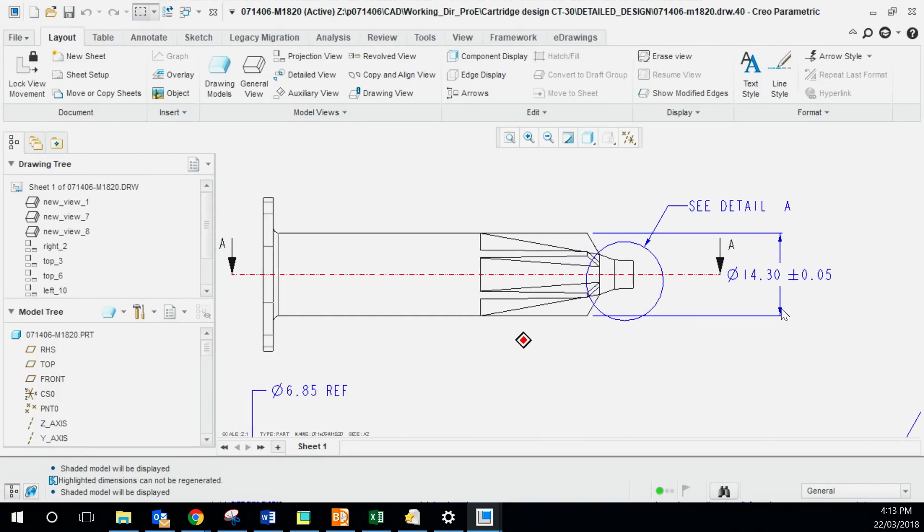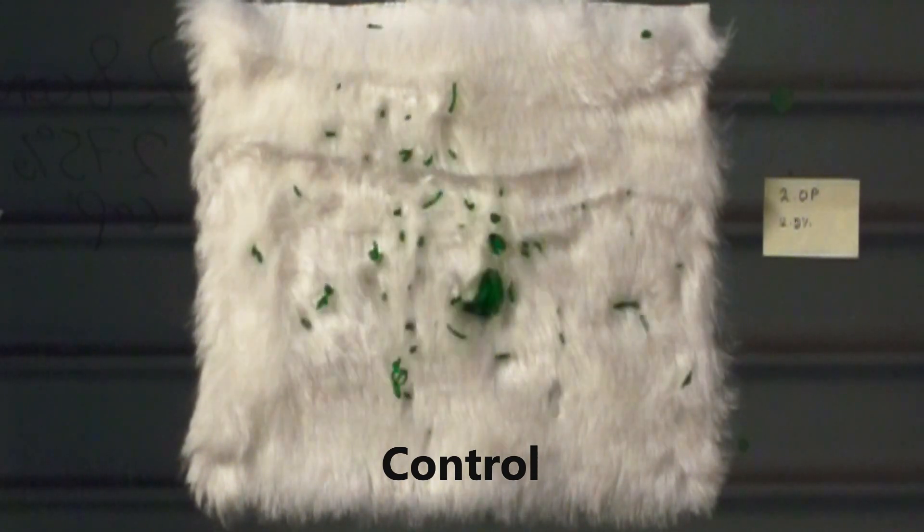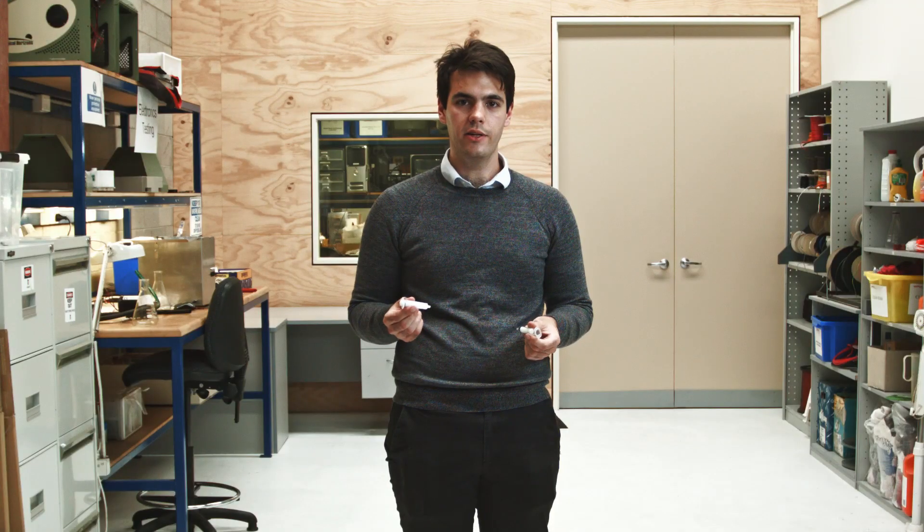After tooling we received samples and validated that they were actually performing as well as our concept validation. The improvements that we saw in the cartridges reduced our gel splatter from 280 millimeters to 40 millimeters. We've now started mass producing these cartridges which are being used in the field.